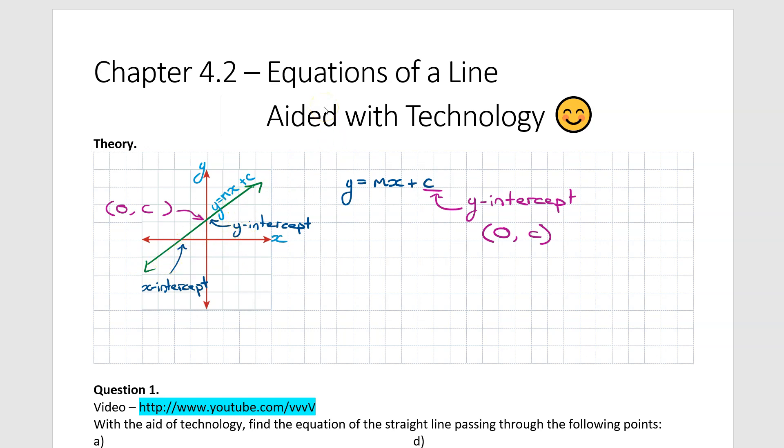So the gradient itself is described by this variable m. And from our study in the past what we found is that our gradient or m is equal to our rise over run.